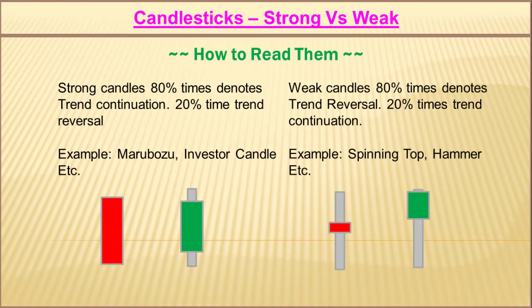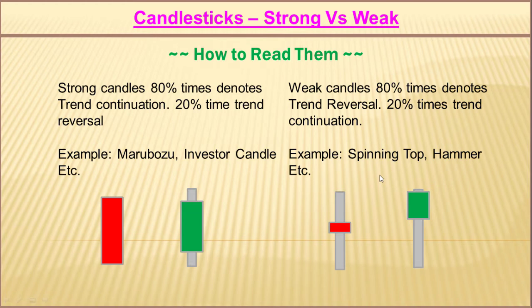On the other hand, a weak candlestick 80% of the time denotes trend reversal and 20% of the time trend continuation. Some examples of weak candles are the spinning top and the hammer candle. There are many other patterns which we will discuss in later videos. But for now, understand that if you see any weak candle on a chart, 80% of the time you should think the trend is going to reverse, and 20% of the time that the trend will continue.